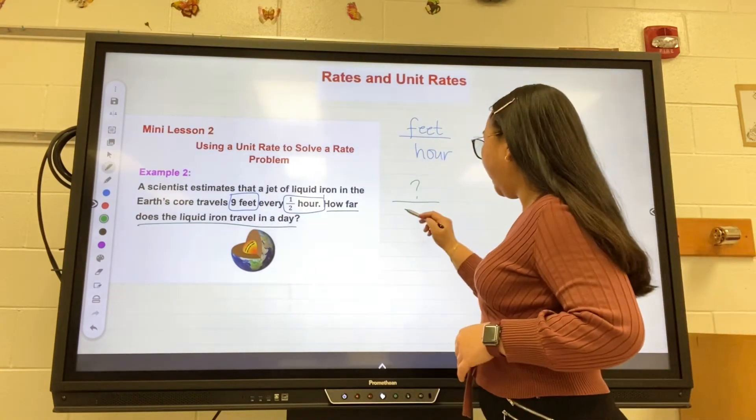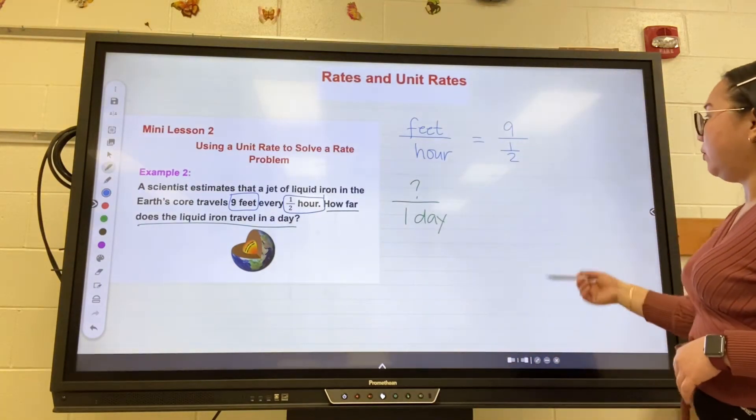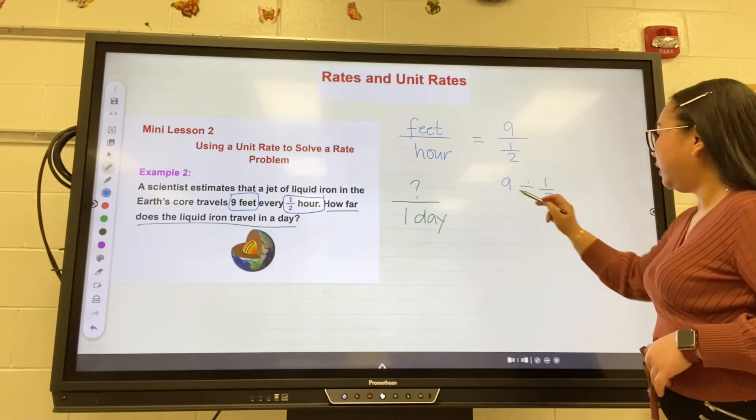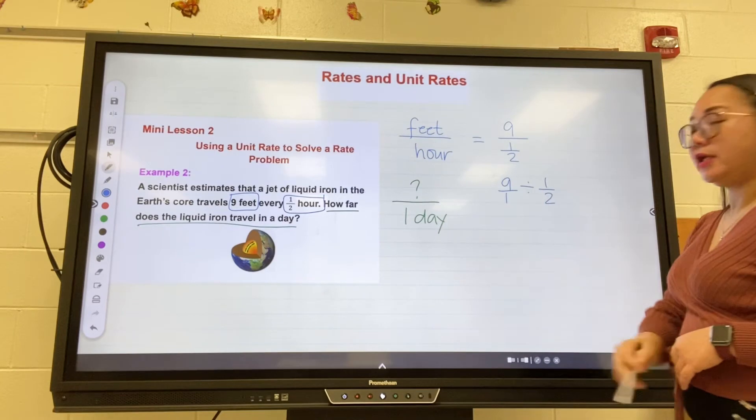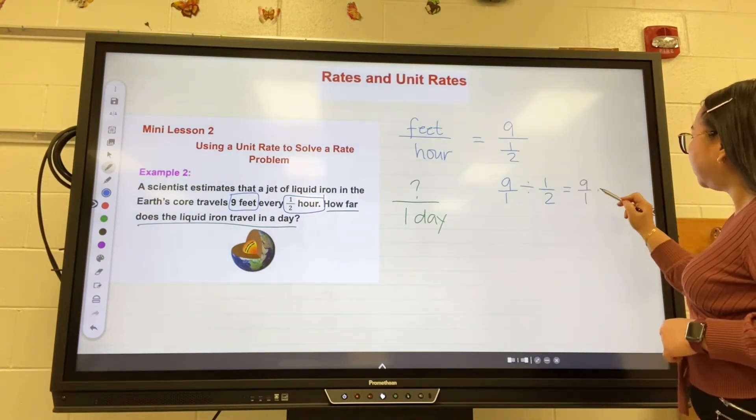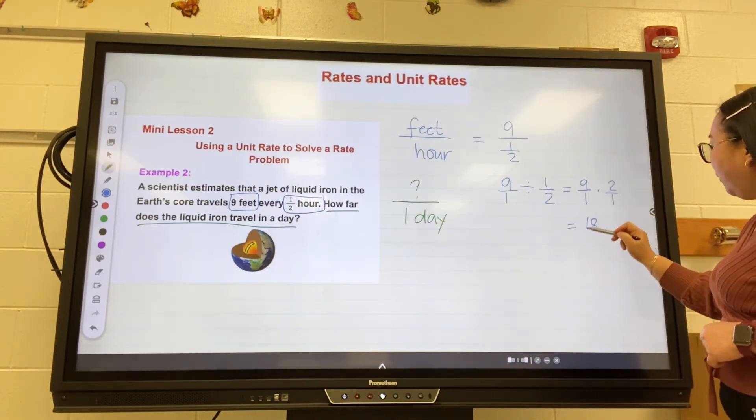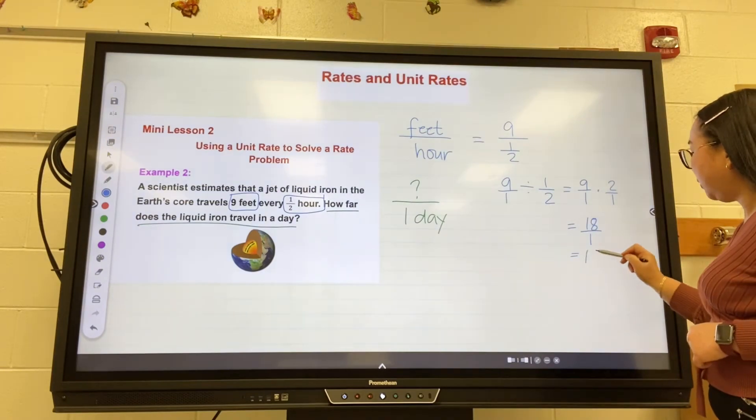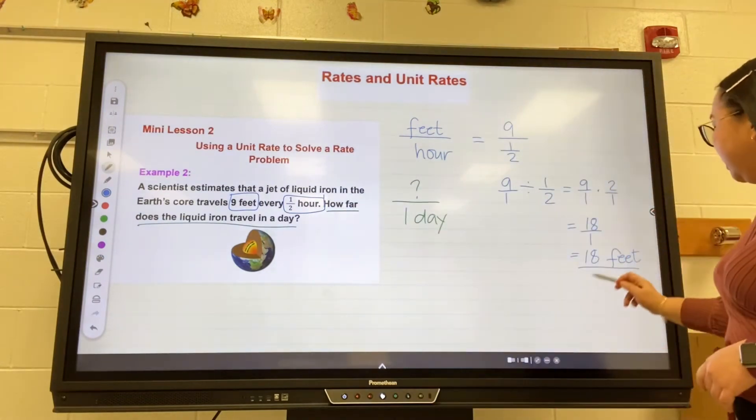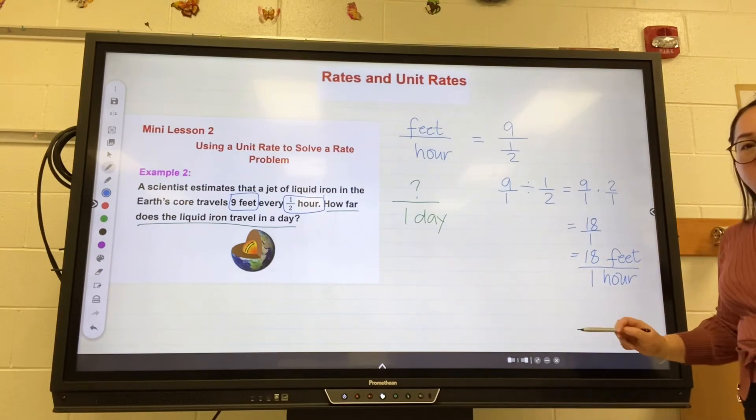We've already set up the ratio, so we will write this as nine divided by one-half. Turn nine into a fraction - that's nine over one - which is eighteen over one, or equal to eighteen. This means that the liquid iron travels eighteen feet per hour, or for every one hour.